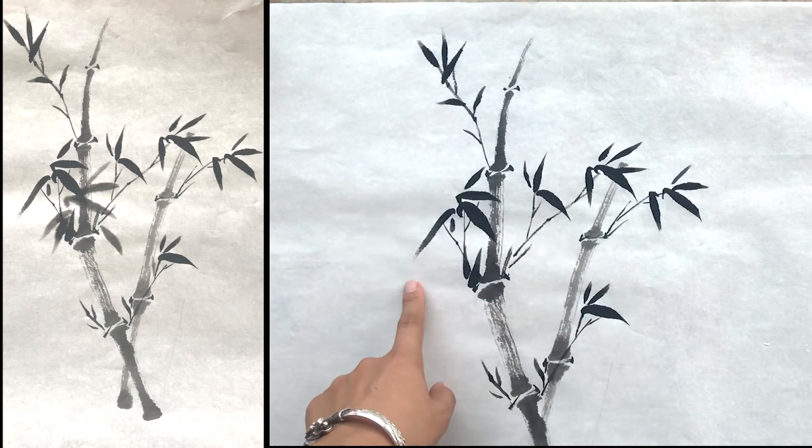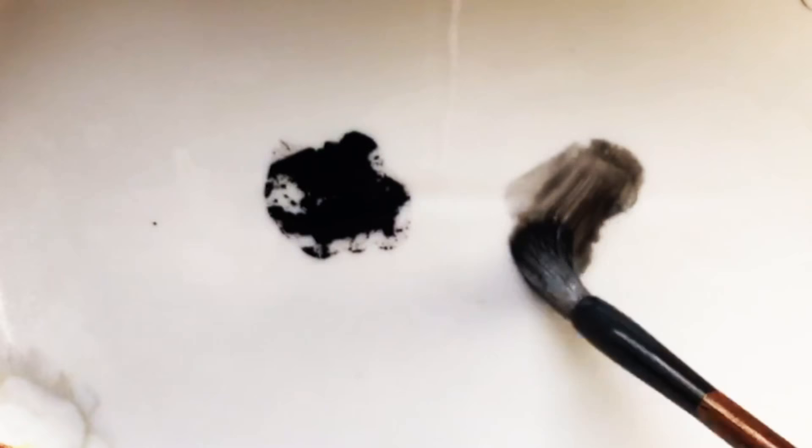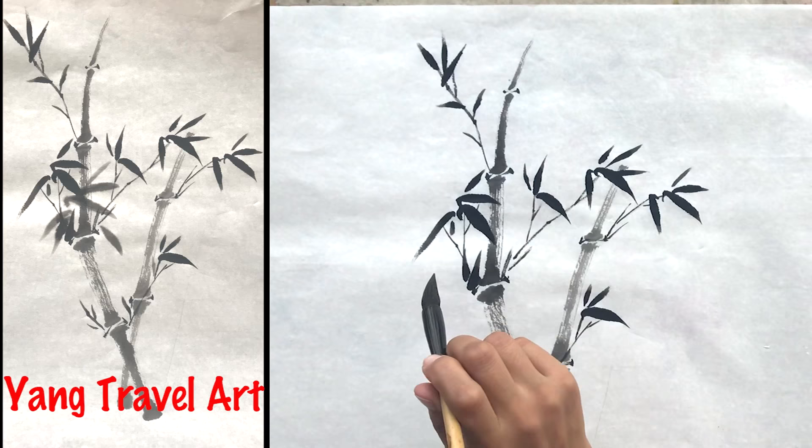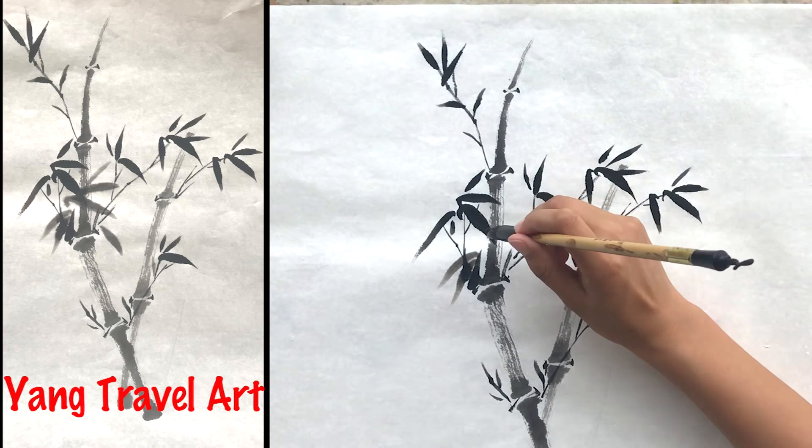Add more leaves with light ink between the dark leaves. You can just paint the light ink leaves over the dark ink leaves.